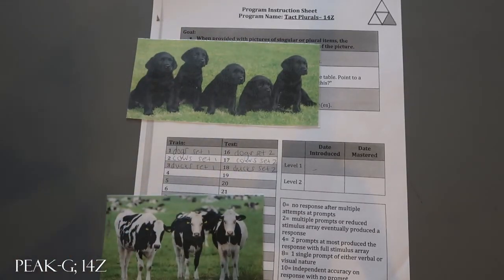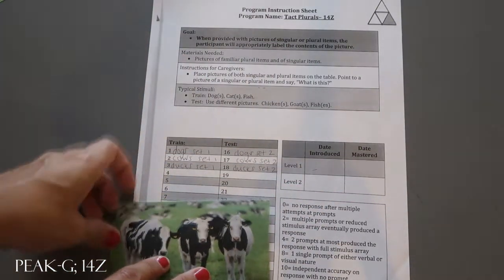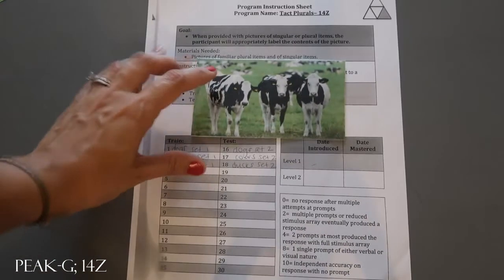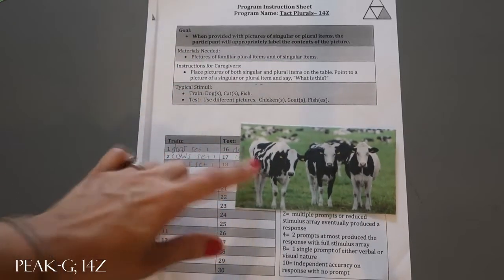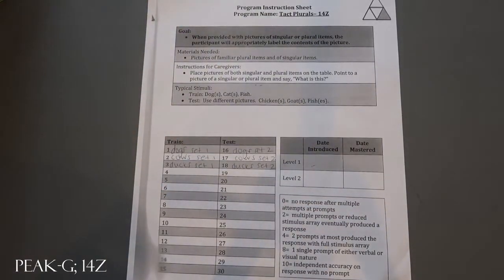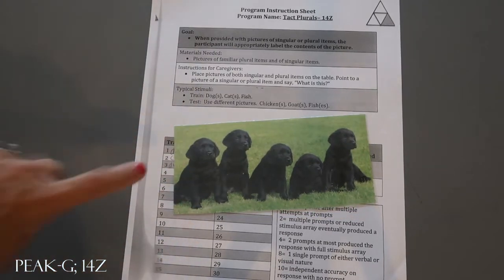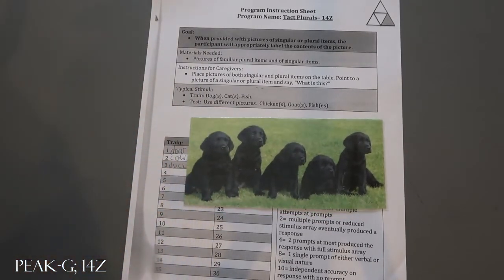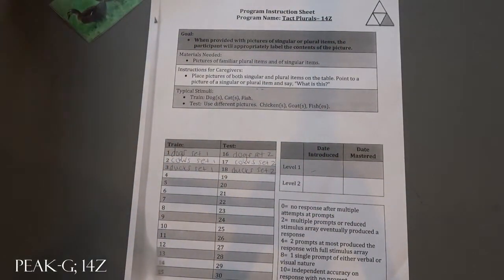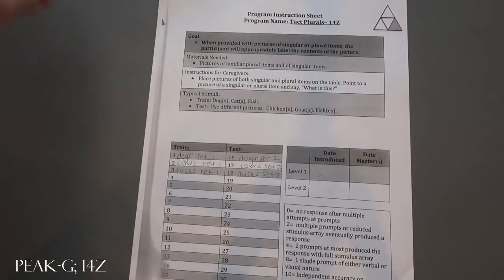For the train class, we have a set for dogs, a set for cows, and a set for ducks. You would show them one of these pictures and say 'What is this?' They would hopefully say 'cows' — you would prompt and do whatever you needed to get that answer. For example, if you show the dog picture and they say 'dog,' you'd correct them: 'There's more than one dog — oh, it's dogs.' Then for the duck set: 'What is it?' — and you could be prompting and giving feedback for all three of those.